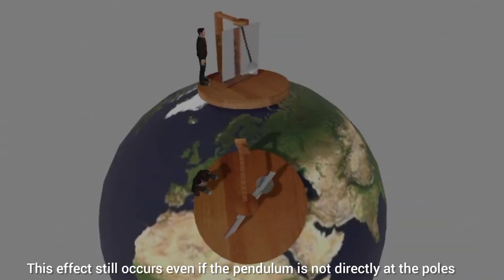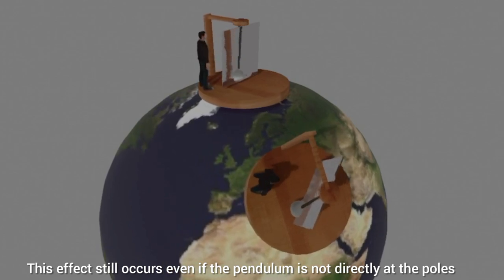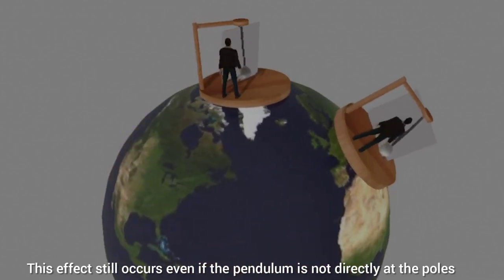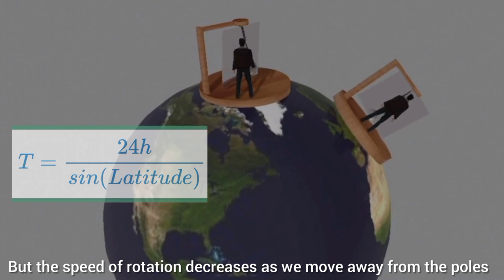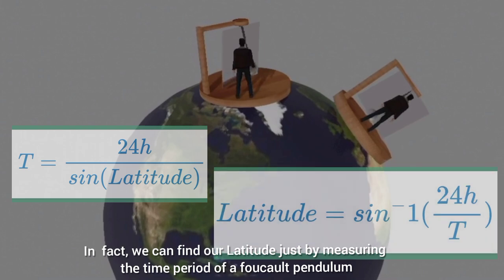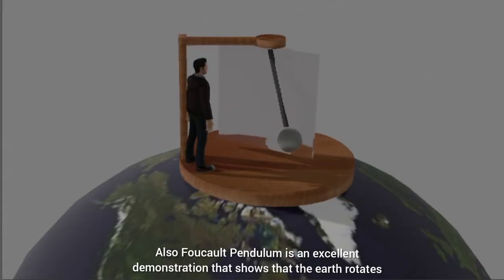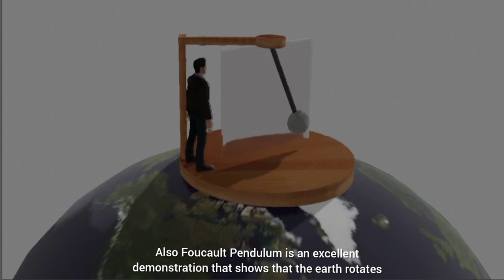This effect still occurs even if the pendulum is not directly at the poles, but the speed of rotation decreases as we move away from the poles. In fact, we can find our latitude just by measuring the time period of a Foucault pendulum. Also, Foucault pendulum is an excellent demonstration that shows that the Earth rotates.